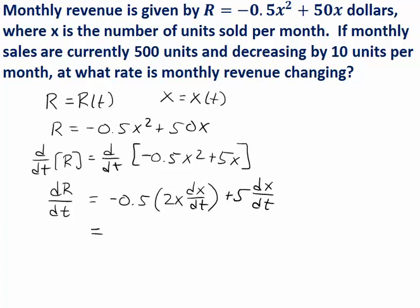We could simplify this a little bit. We could take negative 0.5 and multiply by the coefficient 2, turn that into negative 1, so we end up with negative x dx/dt plus 50 dx/dt. And we could combine like terms if we want here by writing this as (50 minus x) times dx/dt.